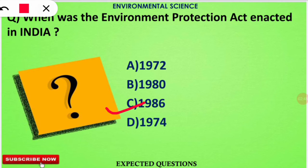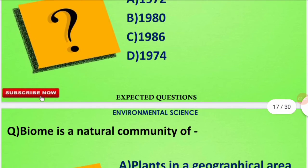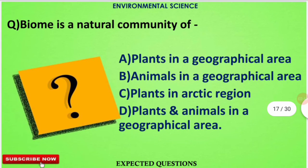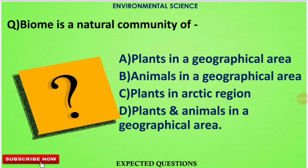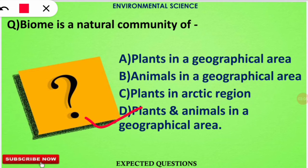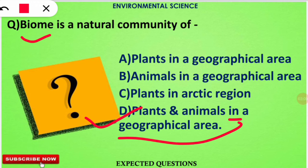The next question is: a biome is a natural community of which of the following? The correct option will be option number D — plants and animals in a particular geographical area are called a biome. Examples include tundra, taiga, or desert.